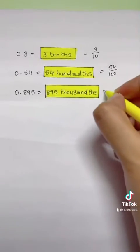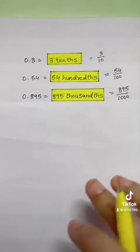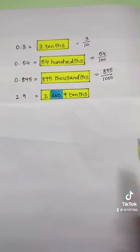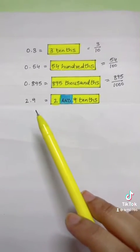It can be rewritten as 895 thousandths. Next we have 2.9, which is read as 2 and 9 tenths. The 'and' represents the decimal that separates the whole number and the fraction, and can be rewritten as 2 and 9 tenths.